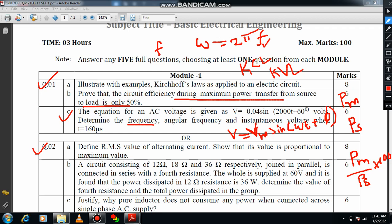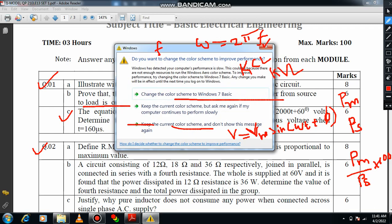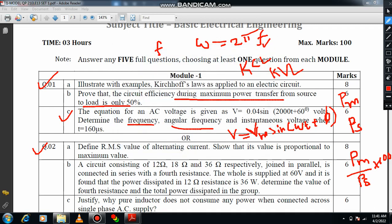Very simple. Put T equals 160 microseconds, which is 160 times 10 to the power minus 6 seconds. Substitute that here, then you are able to get the instantaneous voltage.